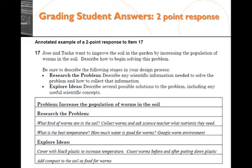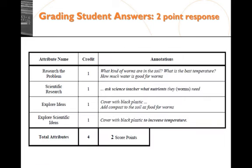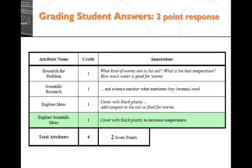Looking at the two-point response, both parts A and B are addressed. Breaking it down: they researched the problem by asking good questions about what soils worms prefer, preferred temperature, and how much water they need. Since Jose and Tasha didn't know the answers themselves, they consulted someone who might — like a science teacher, a pet store, or a local zoo. They explored ideas by covering with black plastic and adding compost for food. For the final attribute — explore scientific ideas — they linked covering with black plastic to increasing the temperature, earning all four attributes for two score points.